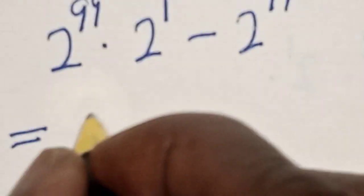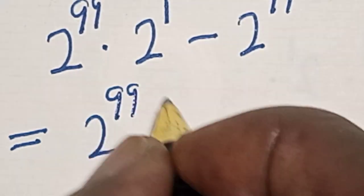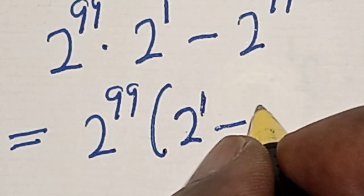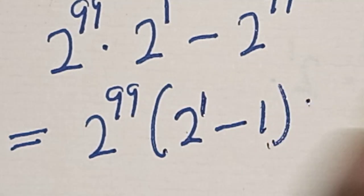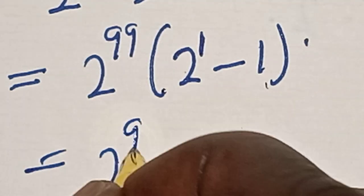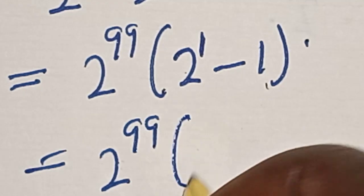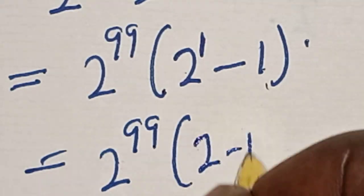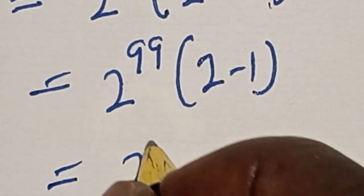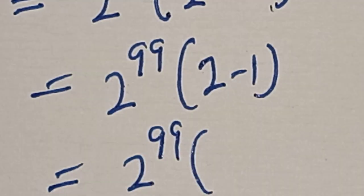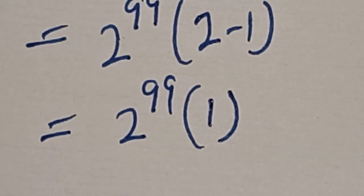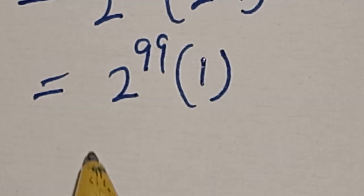This is equal to 2 raised to power 99, into 2 raised to power 1 minus 1. Now, 2 raised to power 1 is 2, so this becomes 2 raised to power 99 into 2 minus 1, which is 1. Then 2 raised to power 99 times 1 equals 2 raised to power 99.